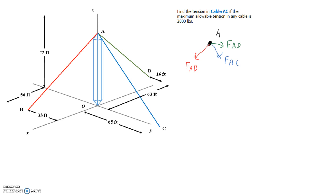The last force I'm going to draw is the force of the tower. We need to get really good at identifying two-force members. The tower has a pin connection at the bottom and a pin connection at the top, meaning forces are applied at only two locations — it's a two-force member. I'll draw the force of the tower acting straight along its axis. When drawing free body diagrams at a point, I always draw forces pulling away in tension, and if I get a negative answer, it automatically signifies a compressive member.